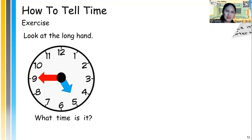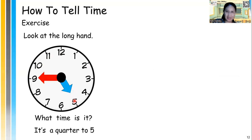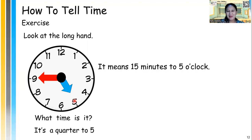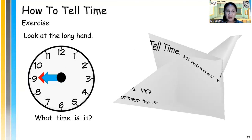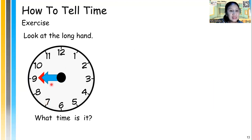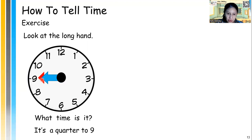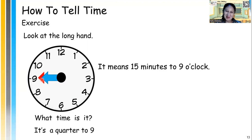What about this one? What time is it? It's quarter to — the short hand? It's a quarter to 5. Good job, excellent! It means 15 minutes to 5 o'clock. Next one: both hands are pointing at number 9, so it's a quarter to 9. 15 minutes more and it's going to be 9 o'clock.